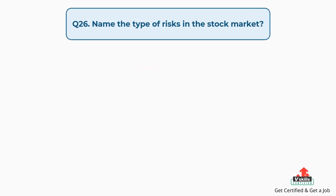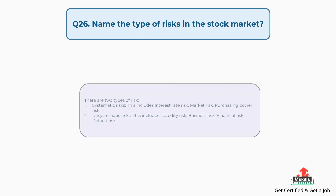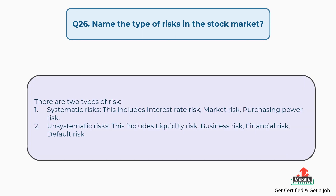Question number 26: Name the types of risks in the stock market. There are two types of risks. First, systematic risks: this includes interest rate risk, market risk, and purchasing power risk. Second, unsystematic risks: this includes liquidity risk, business risk, financial risk, and default risk.